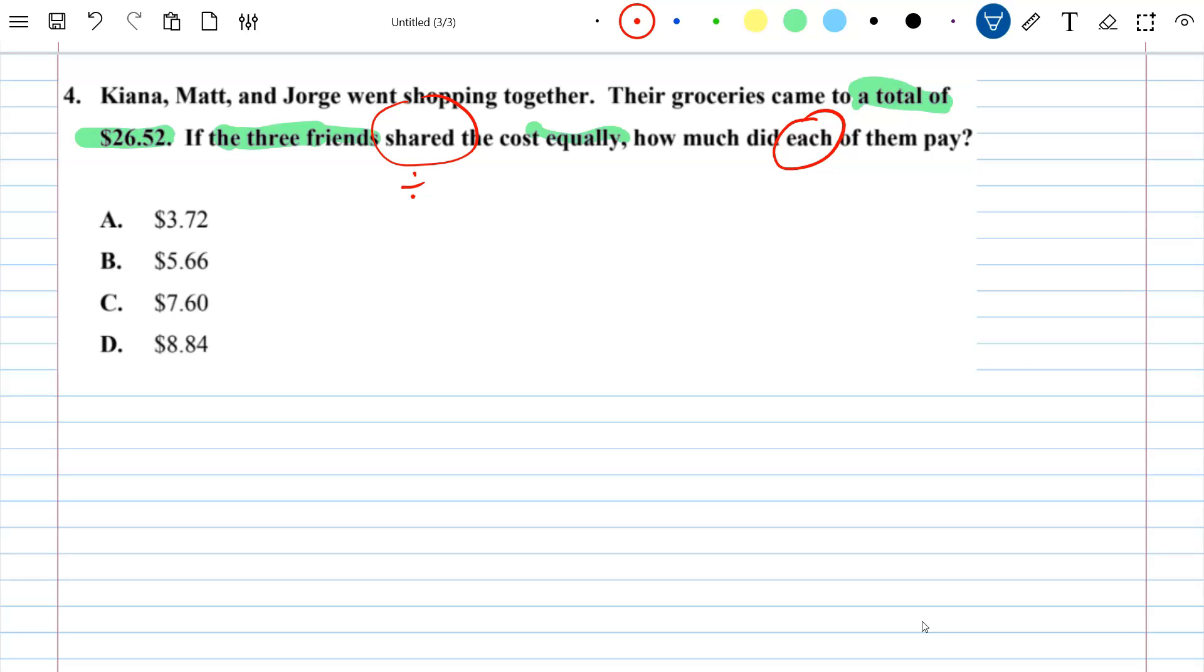So let's go ahead and you can actually ignore their names. You don't need to know their names because they already gave you that there were three of them and they shared it equally.